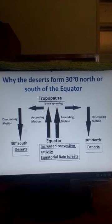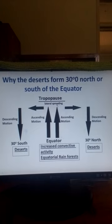Now this air that rises reaches the top of the atmosphere. As it reaches the top there is lateral spreading — some of the air moves towards the poles, some moves towards the north and some moves towards the south.